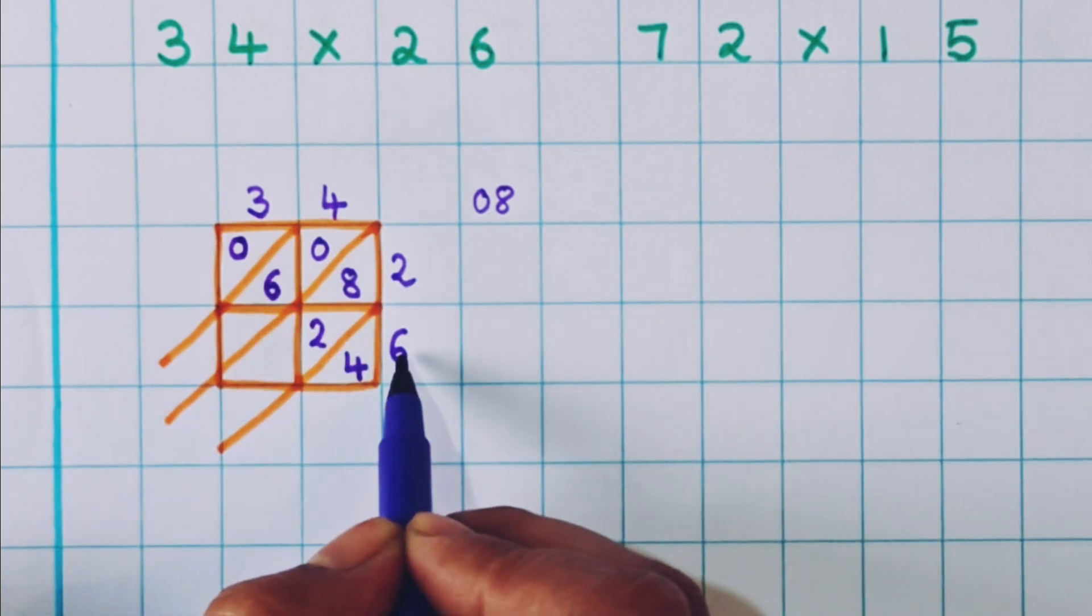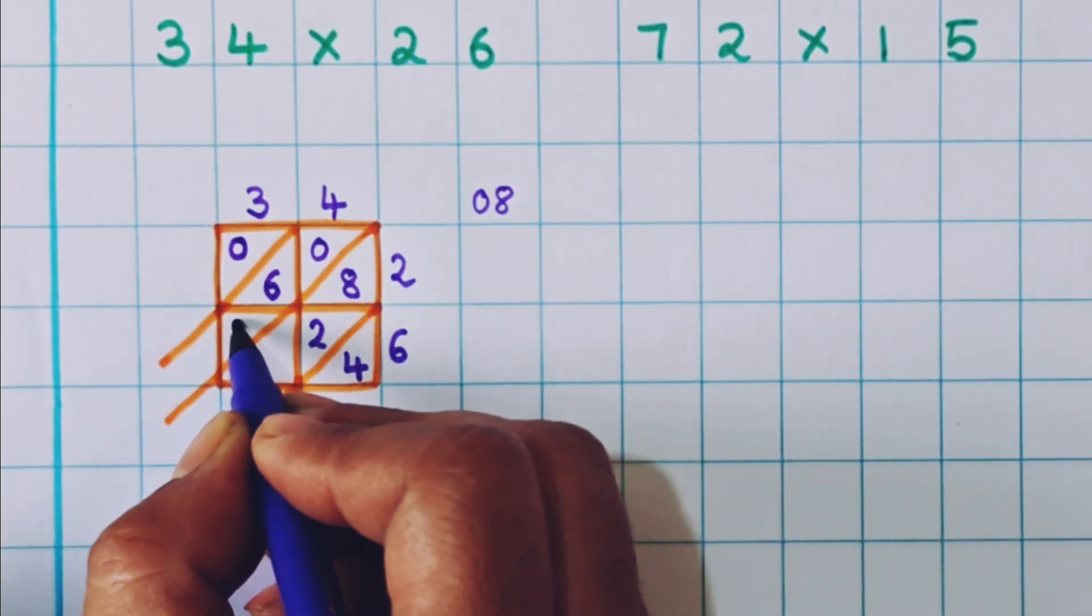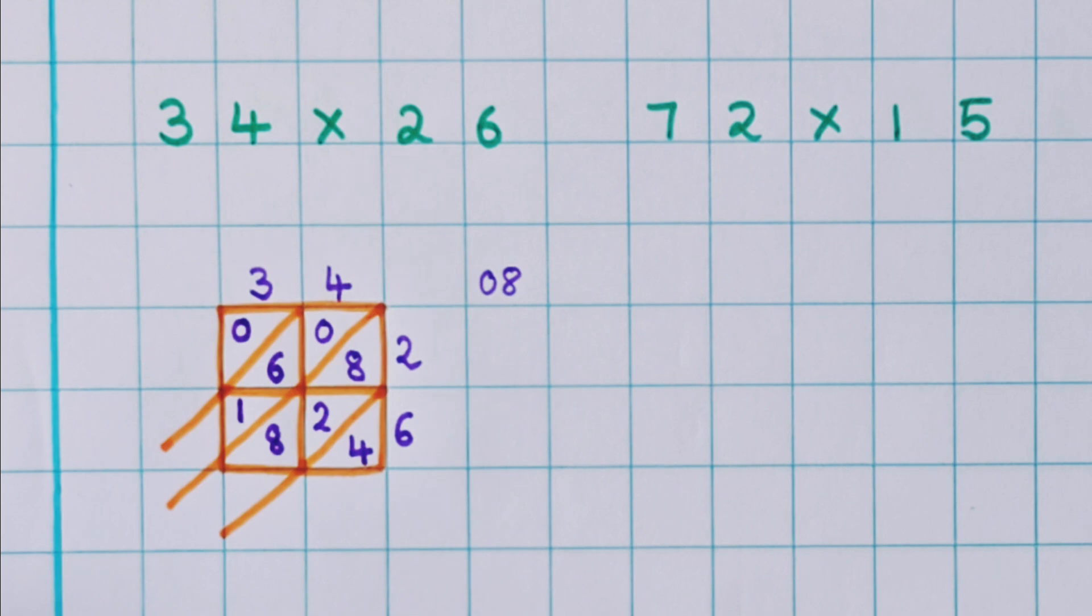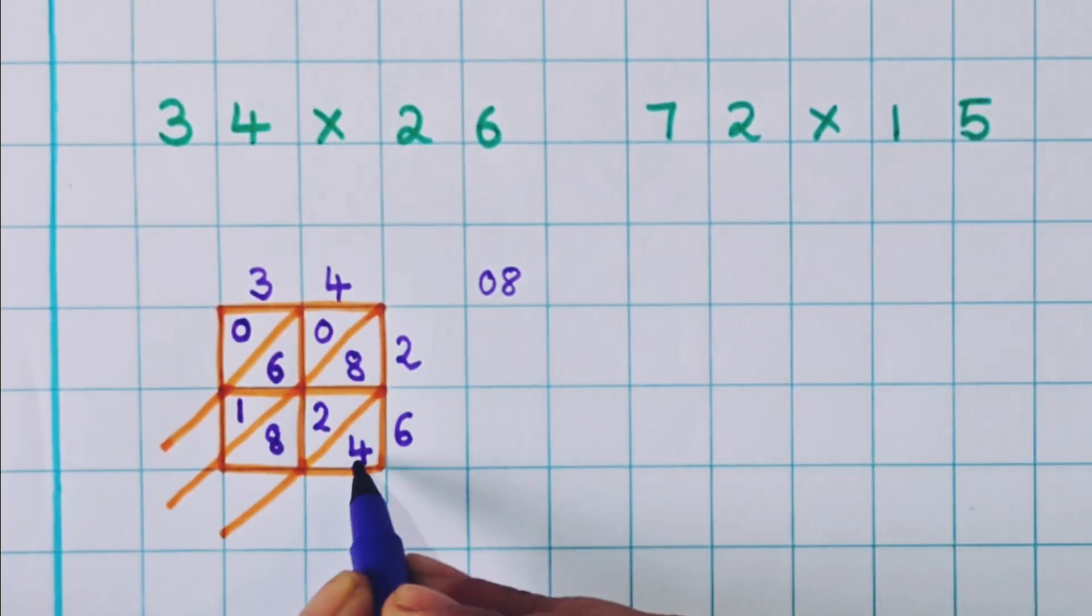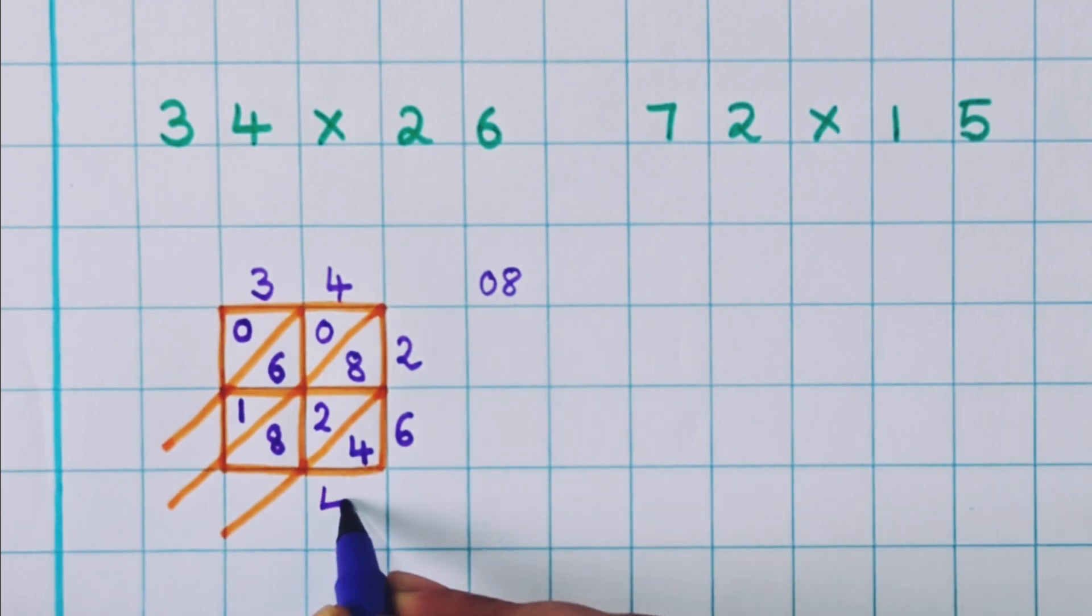Now three sixes are 18. So here I will write 1, 8. Now we are going to do the addition diagonally. So here 4 plus nothing, so it will be 4.